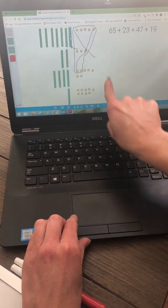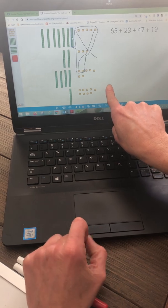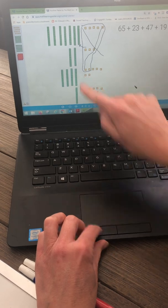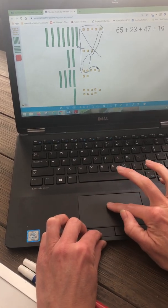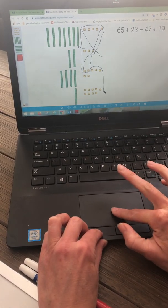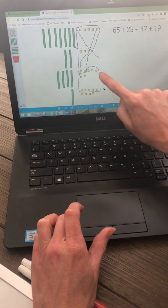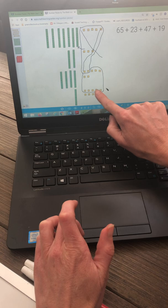But, I still have more than 10 ones left. So, I am going to have to regroup and exchange again. So, I've got 1, 2, 3, 4, 5 up here. And I can grab another row of 5. Let's make sure I have 10. 1, 2, 3, 4, 5, 6, 7, 8, 9, 10.